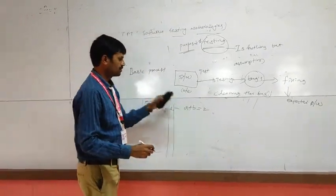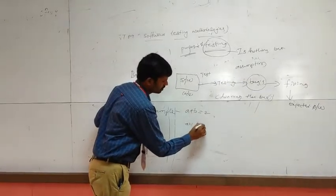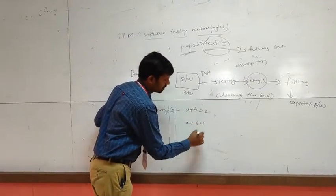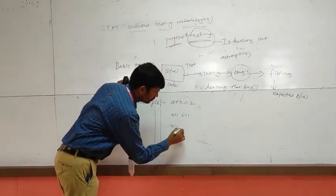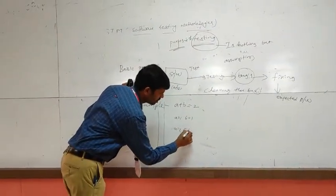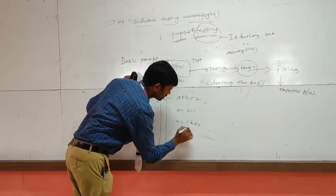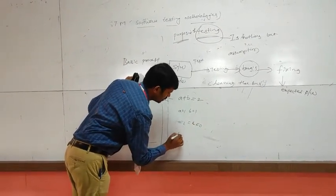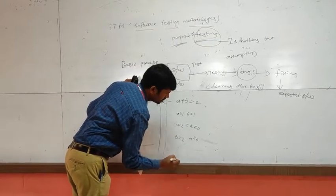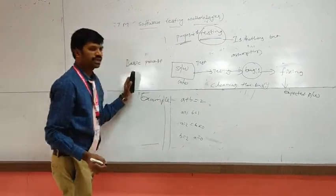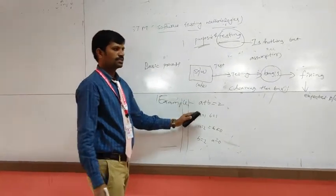We have to assume that a equals 1 and b equals 1. Another case: a equals 2, b equals 0. Next: b equals 2, a equals 0. These are clear to execute.